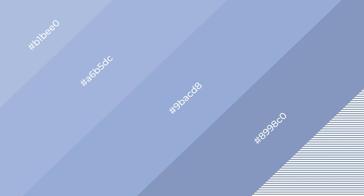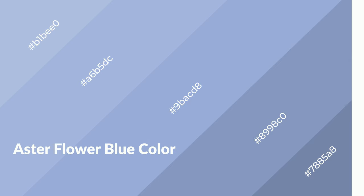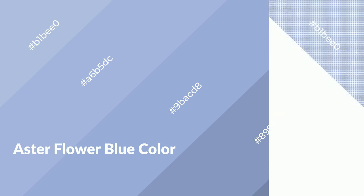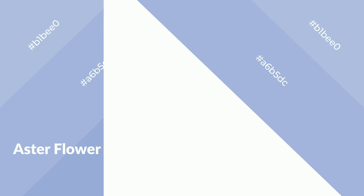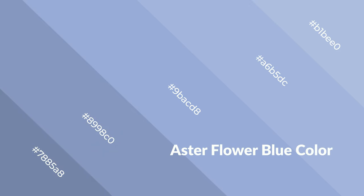Aster flower blue is a cool color and it emits calming, serene, soothing, refreshing, spacious, unwinding, peaceful, and relaxed emotions. Cool colors are like water, ice, sky, grass, soft, and snow. You can see them used in baby products.